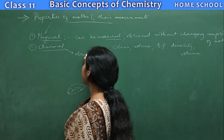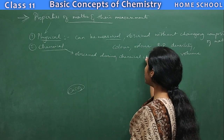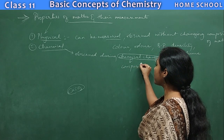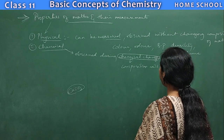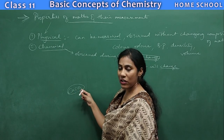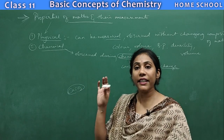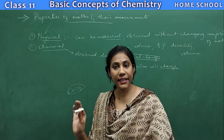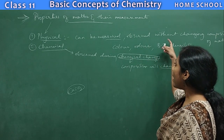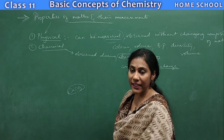Coming to chemical properties — these are observed during a chemical change. A chemical change has to take place to observe chemical properties. During the chemical change, the composition will change. If a chalk piece undergoes some reaction, the ratio of calcium, carbon, and oxygen in the compound would change. That is the difference: during physical properties, the composition of matter does not change, and they are measurable properties.